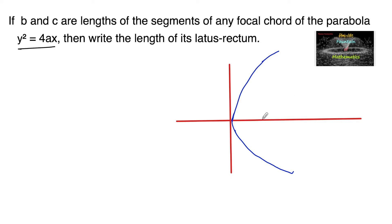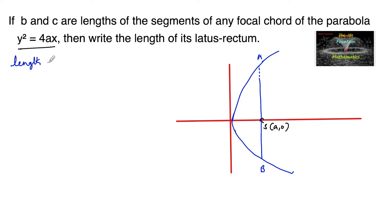Let S be the focus. The latus rectum is drawn perpendicular to the axis passing through the focus. Say AB is the length of the latus rectum. We know that the length of the latus rectum of the standard form is 4a. So the length of the latus rectum equals 4a.